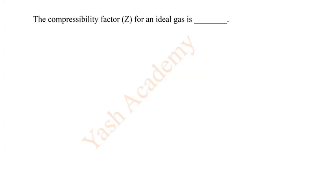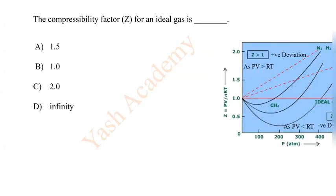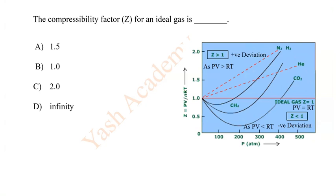The compressibility factor Z for an ideal gas is: Options A 1.5, B 1, C 2, D infinity. The correct answer option of this question is B: 1.